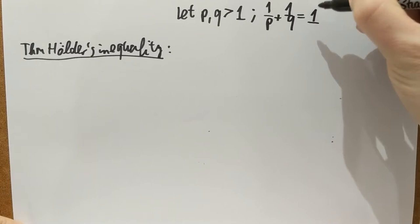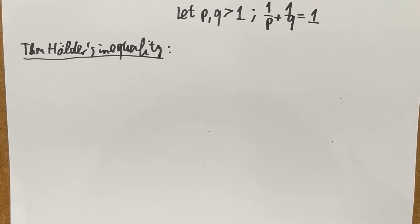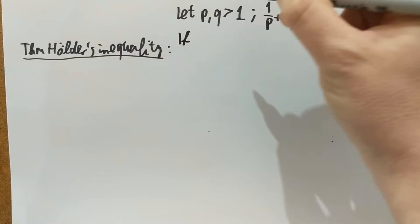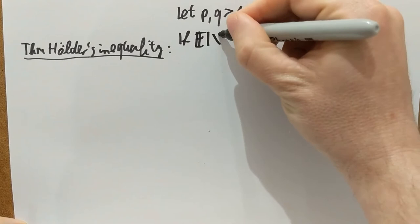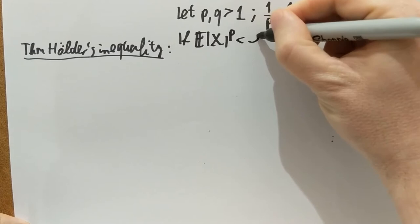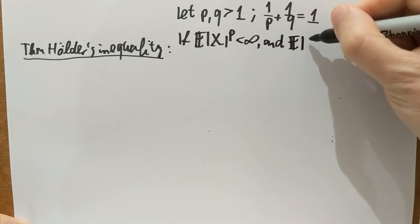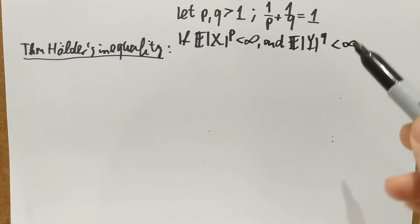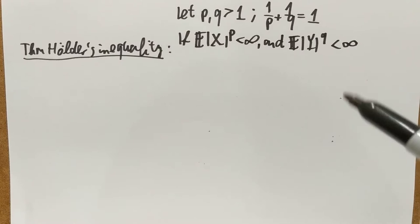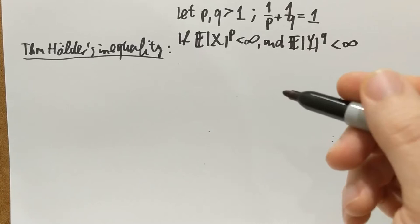So instead of what we had before, we're now having 1 over P plus 1 over Q summed up equals 1. Let's assume that we have 2 random variables X and Y, and the P-th absolute moment of X is finite, and the Q-th absolute moment of Y is finite. The notation is that I'm taking mod of Y, then to the Q-th power, and then the expectation.